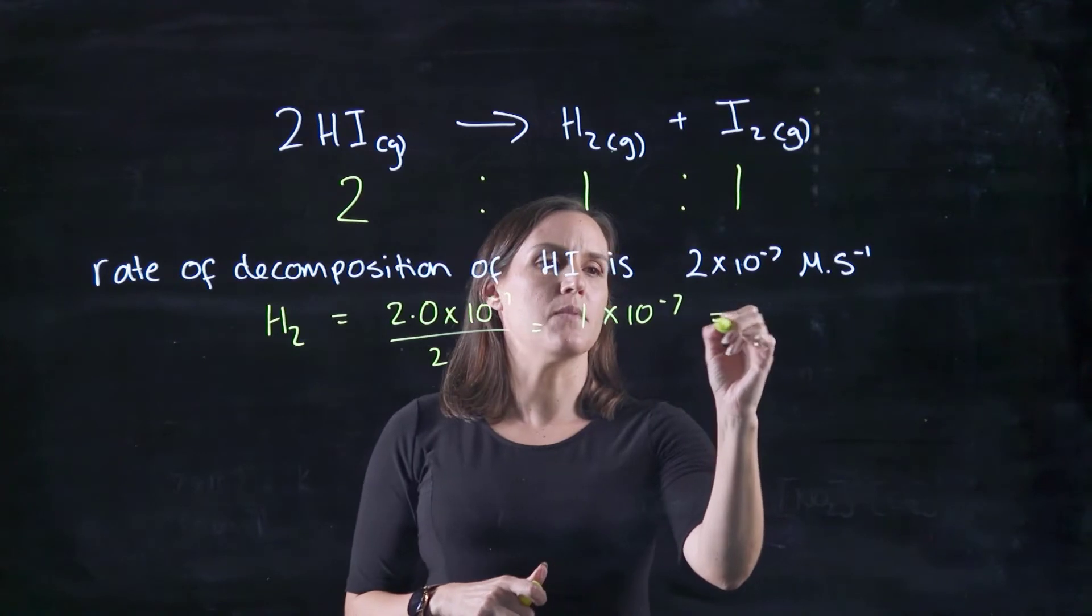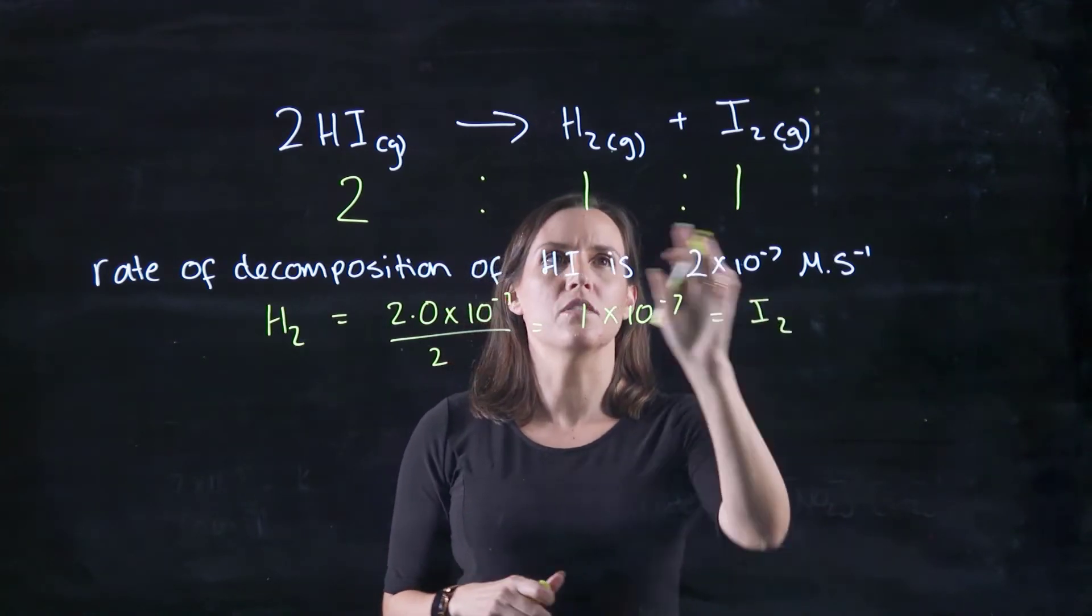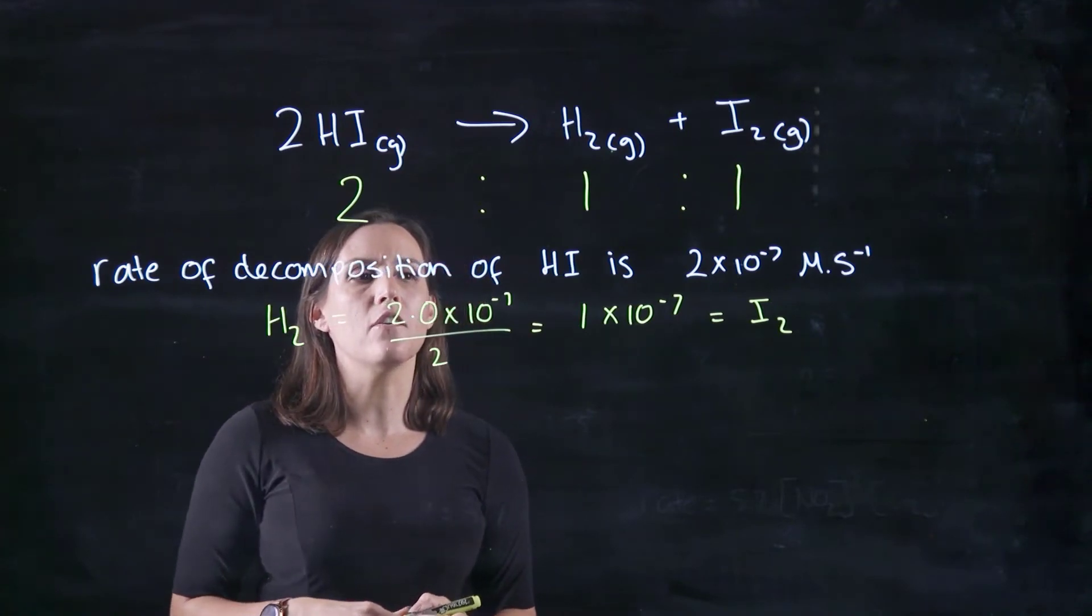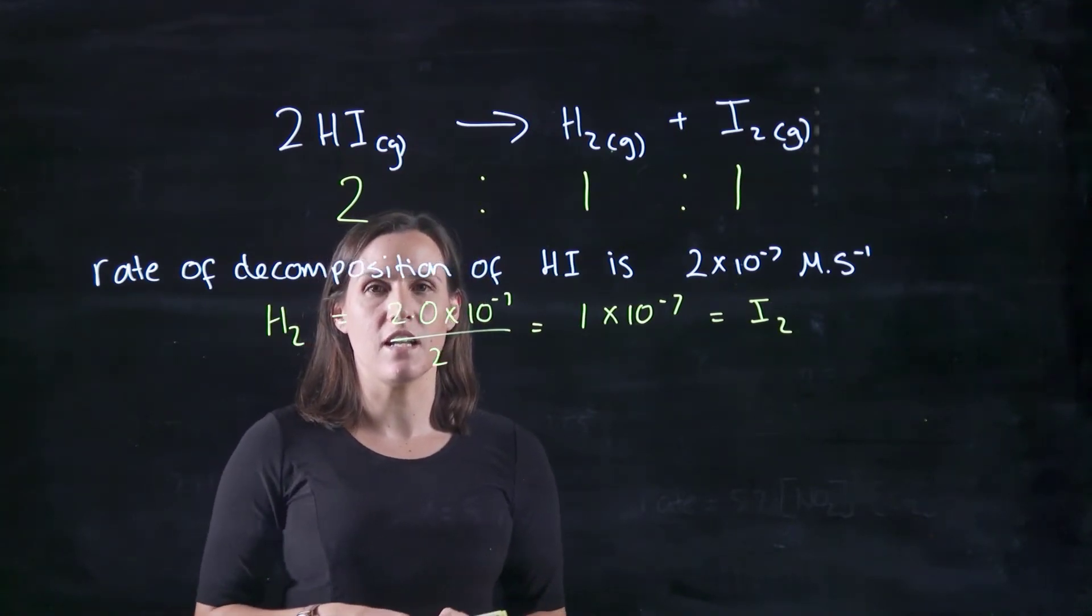And H2 would equal the same as I2 because they're 1 to 1. So both H2 and I2 would be appearing at a rate of 1 times 10 to the negative 7.